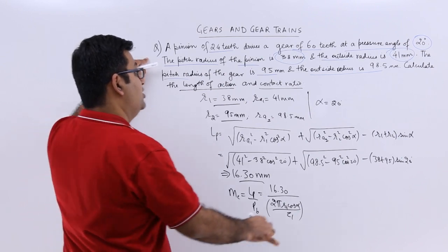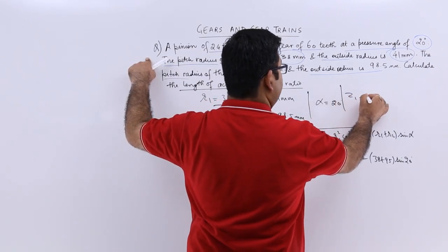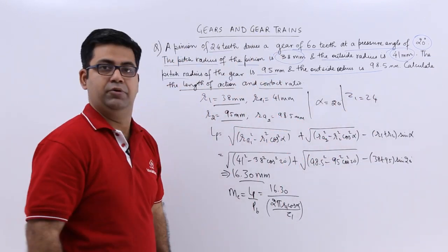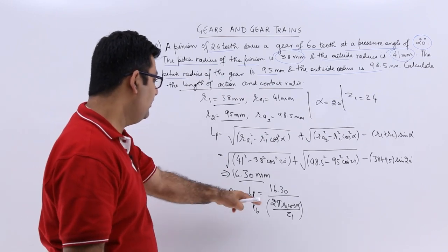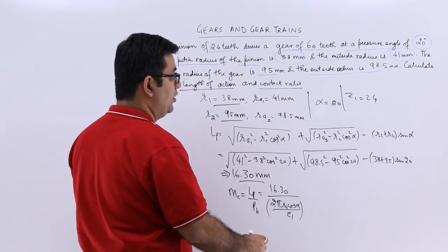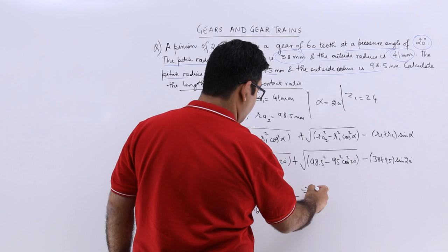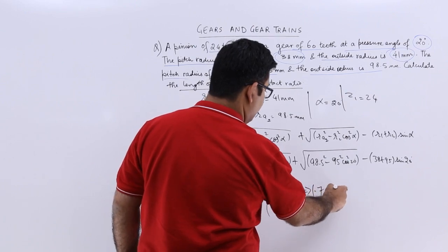Now 1 is the pinion, so Z1 is 24. So put in the value, you get your contact ratio as 1.744.